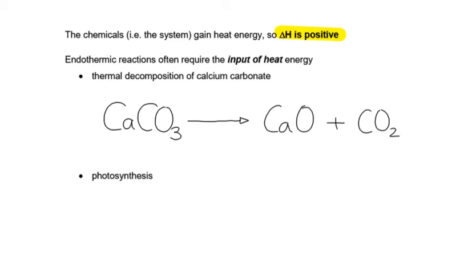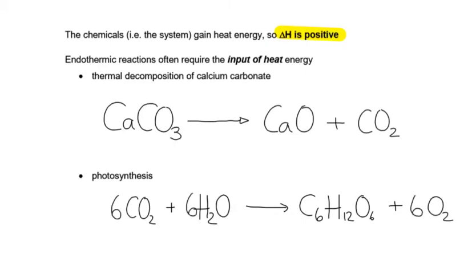Then our photosynthesis, where we take carbon dioxide and water. Plants take in carbon dioxide and water and convert them to glucose. What's the other product? Can you finish that off and balance it? Photosynthesis is the reverse of respiration. These are two important endothermic changes.